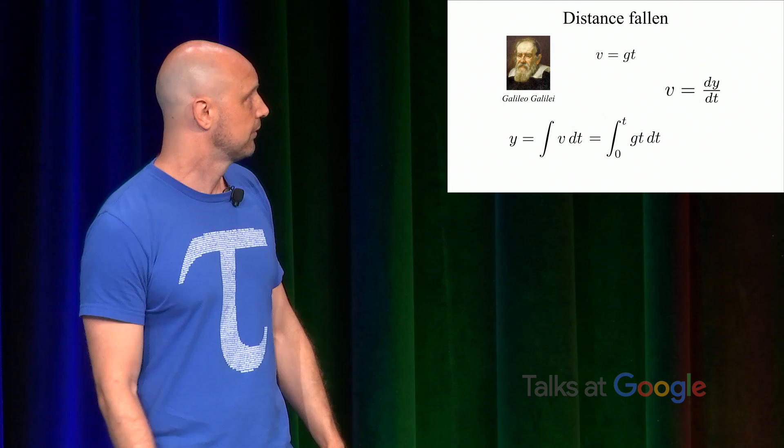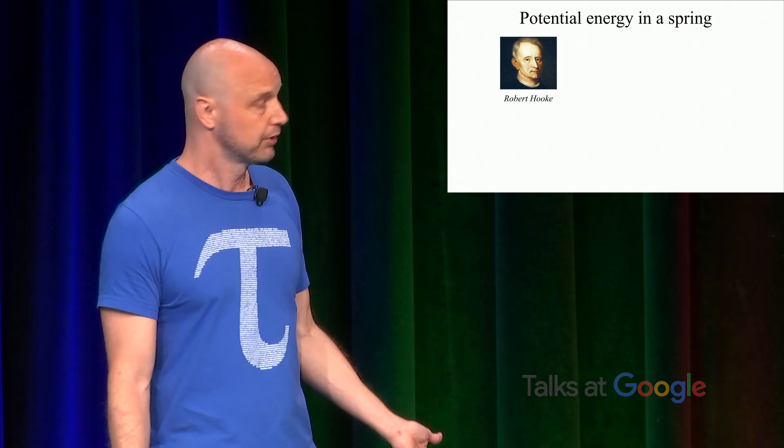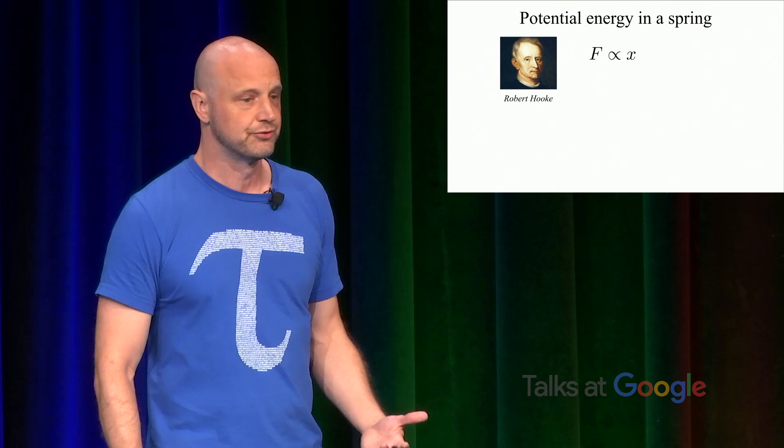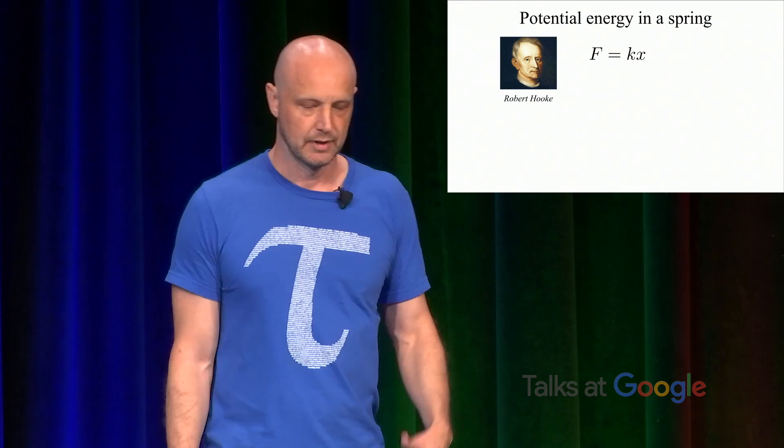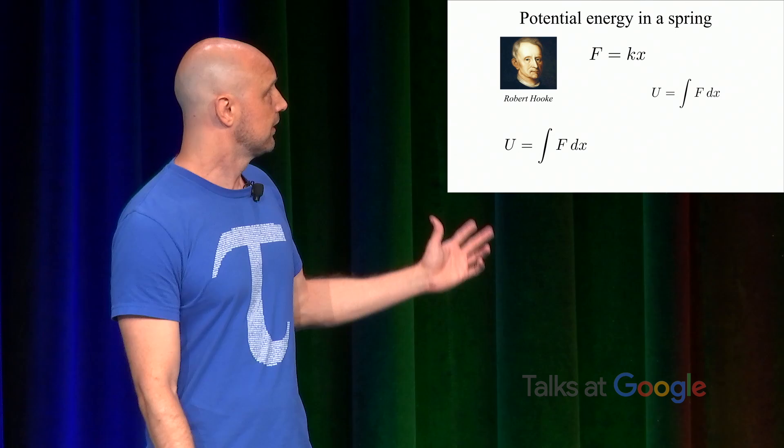We can also look at the potential energy in a spring. Another common thing that shows up in the elementary physics curriculum. Robert Hooke showed that the force that a spring exerts to restore to equilibrium is proportional to the displacement from equilibrium. And the constant proportionality is essentially a measure of the stiffness of the spring, is the spring constant k. And the potential energy is equal to the work done by the spring force as you compress it or stretch it. U is equal to integral of f dx. Integrate the force over the distance. So we say U equals f dx. Integral f dx equals integral from zero up to the final displacement of kx dx, which is equal to one-half kx squared.